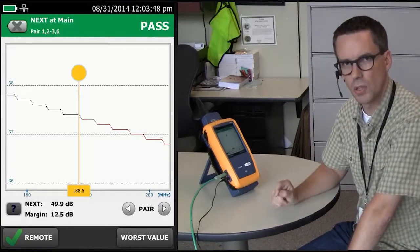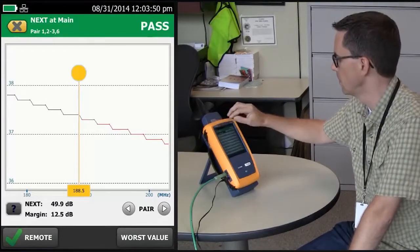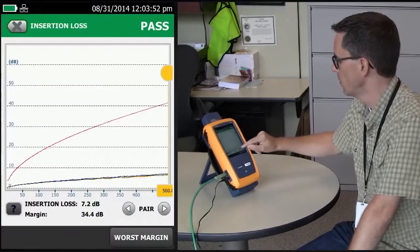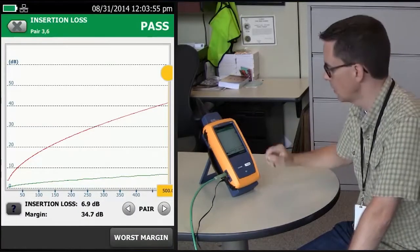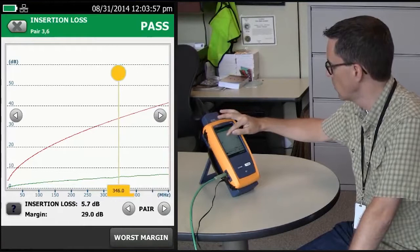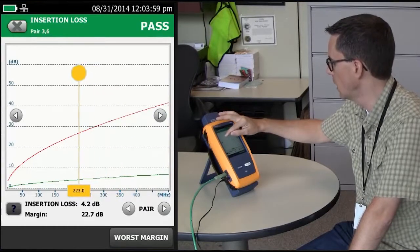Let's go and look at the insertion loss on pair 3, 6. I'm at pair 3, 6, and I'm going to move this to my 188 and a half megahertz.